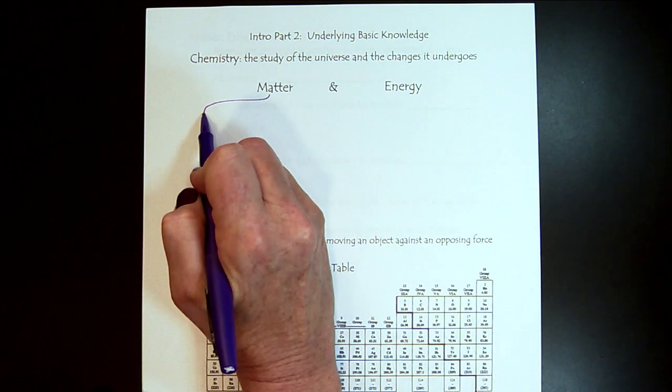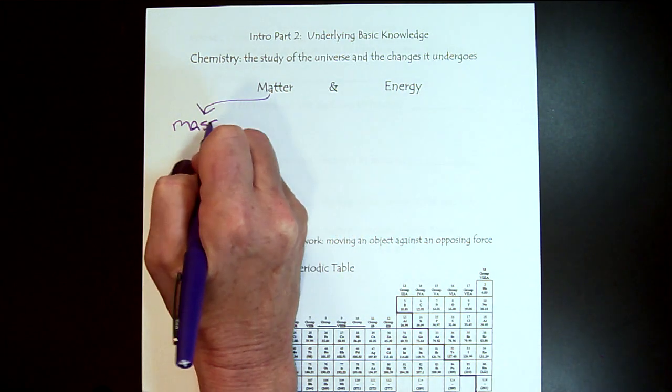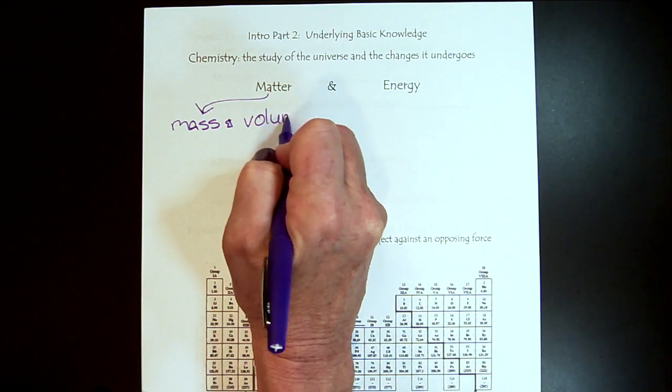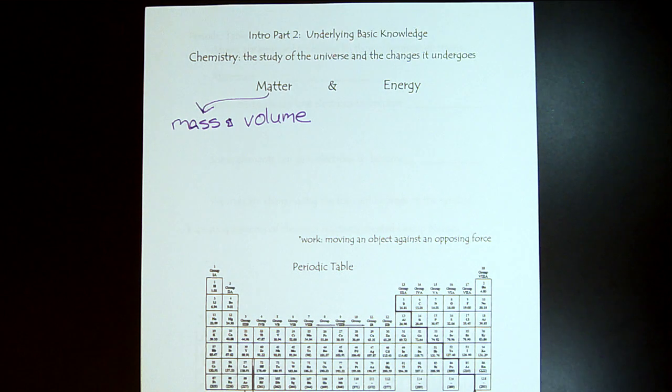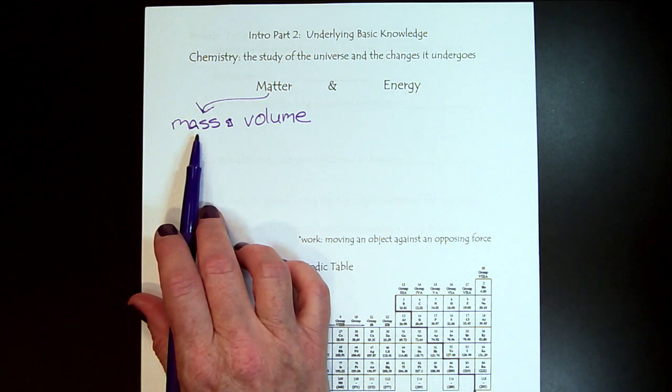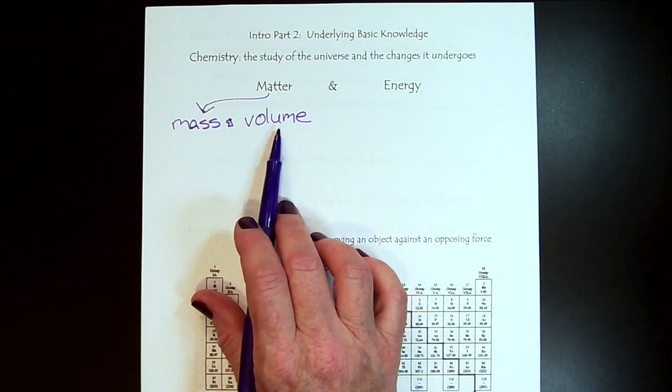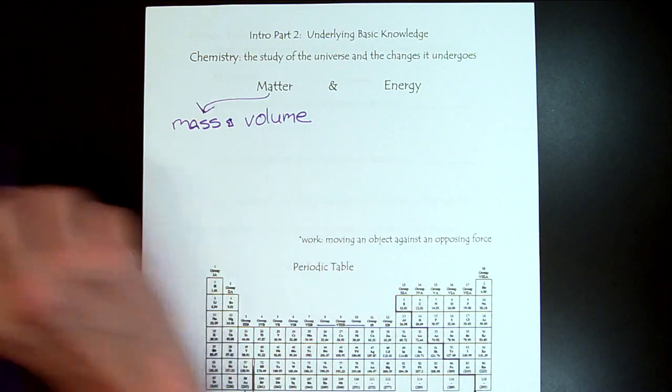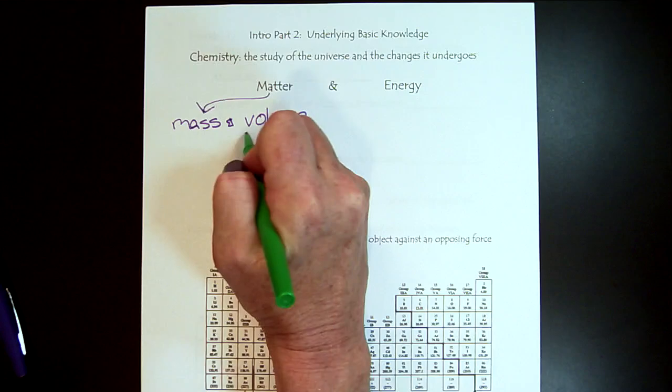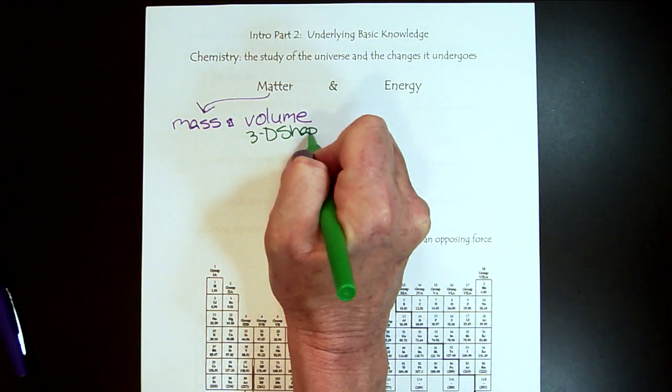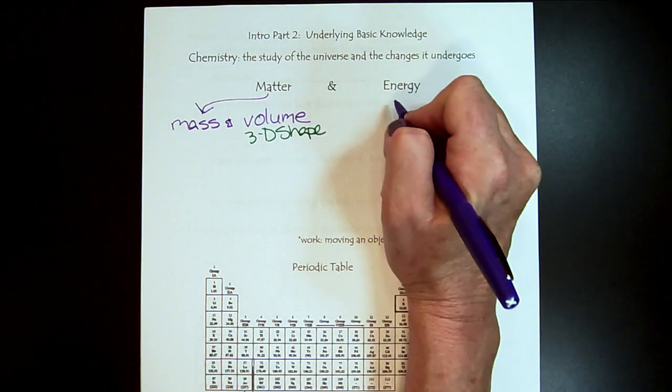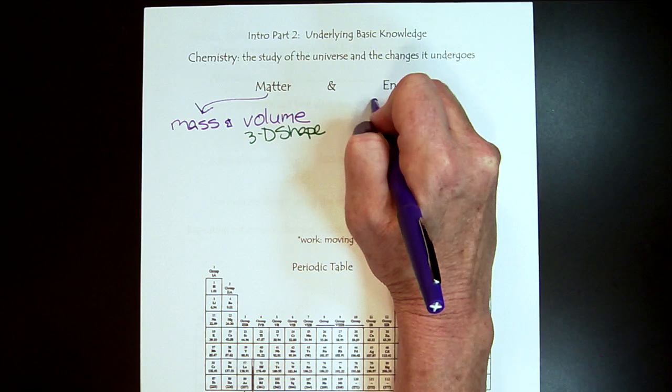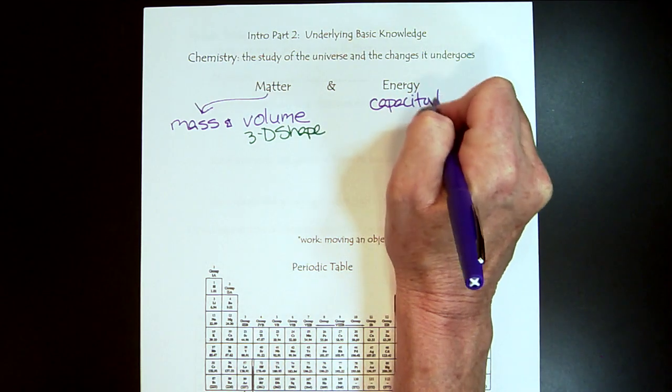Matter is anything with mass and volume. Units are going to be a big deal in this class. Mass units: grams, pounds, ounces. Volume: milliliters, fluid ounces. Volume is the three-dimensional shape - how much space does it take? How much does it weigh and how much space does it take? That's matter. We can weigh it and it has a size.